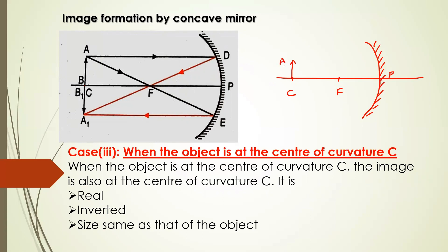AB is your object. Draw a ray parallel to the principal axis — as we have learned, it is going to pass through the focus after reflection. This is your first reflected ray. Then the second incident ray is the one passing through focus, and after reflection it passes parallel to the principal axis. Your image will form at the intersection point.